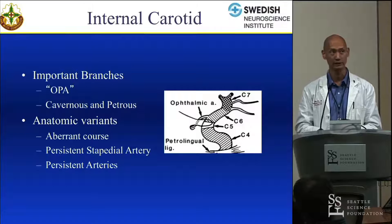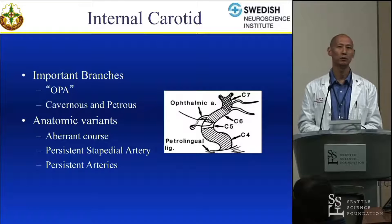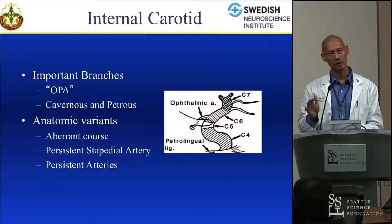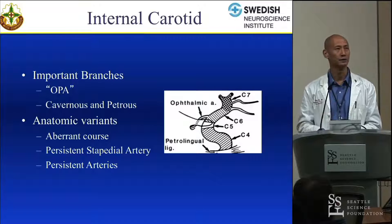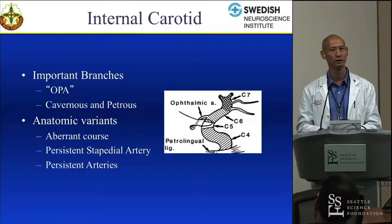The persistence of the stapedial artery — also confirmed by CT temporal bone windows — means there's no foramen spinosum because there's no normal generation of the middle meningeal artery. The middle meningeal artery instead comes off the ICA, running very close behind the stapedius. So the stapedial artery itself gives rise off the ICA to the supply of the middle meningeal territory.